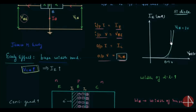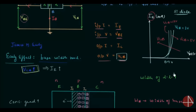The current IE will increase with an increase in VCB. This plot is for VCB equal to 5 volts and this plot is for VCB equal to 10 volts. So with increase in VCB, the input current IE also increases, and the remaining shape is similar to the forward bias characteristics of a PN junction diode. I hope everything explained in this lecture is clear. See you in the next one.